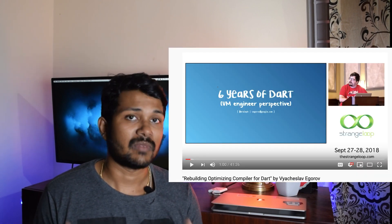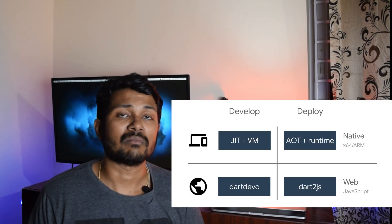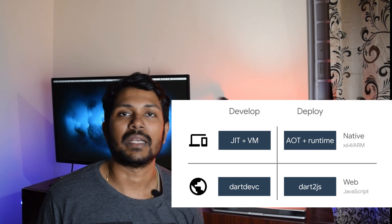The sixth and final point is the journey from the JIT compiler to the current AOT compiler, which took almost six years for the Dart team to create. There's a great 40-minute video by a Russian programmer who explains this journey clearly — I'll put it in the description. He talks about going from just-in-time compilation to the current ahead-of-time compilation.